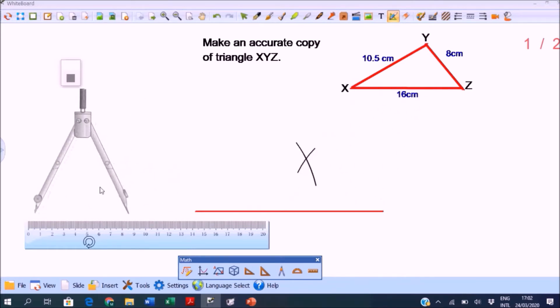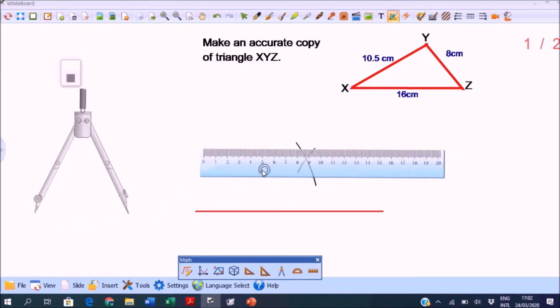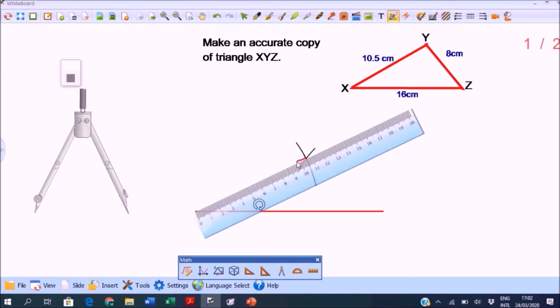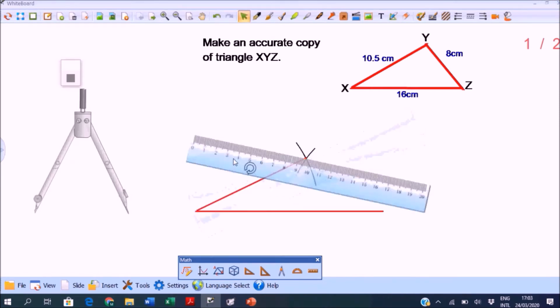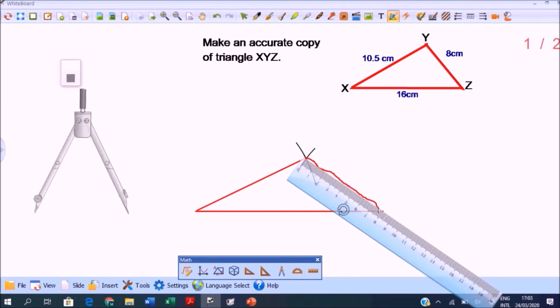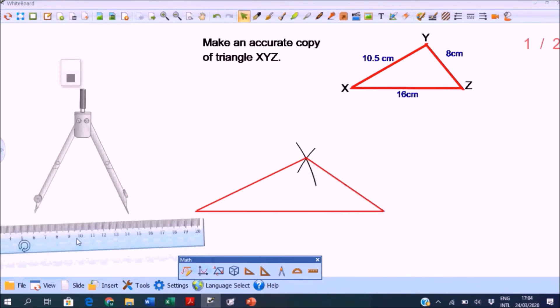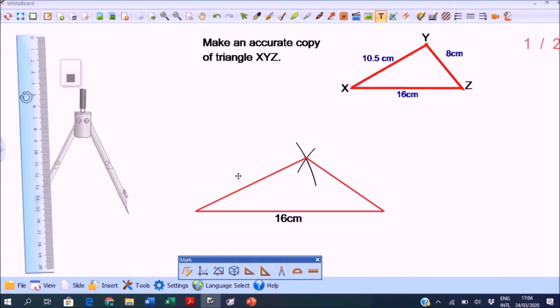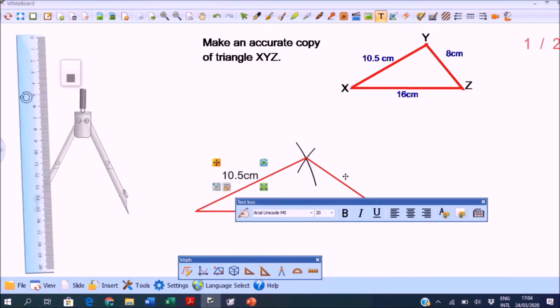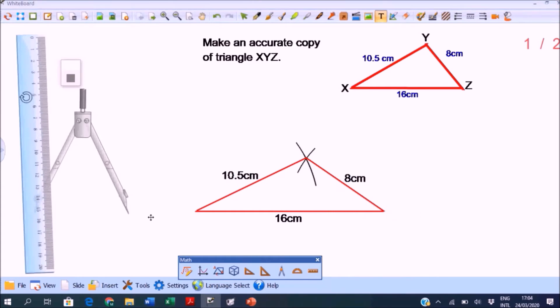Now we will use a straight edge or ruler to connect the intersection of these arcs and the endpoints of our base line 16 centimeters. So this is the 8 centimeter side. This is now an accurate copy of triangle XYZ with sides 16 centimeters, 10.5, and 8 centimeters.